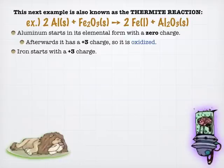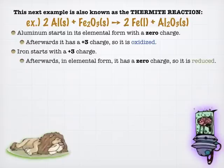So anyway, so in this case, aluminum starting with a zero charge and getting a plus three charge. Once it's in aluminum oxide, we know how to figure out that charge. So again, it's being oxidized. In this case, iron starts with a plus three charge and goes to a zero charge.